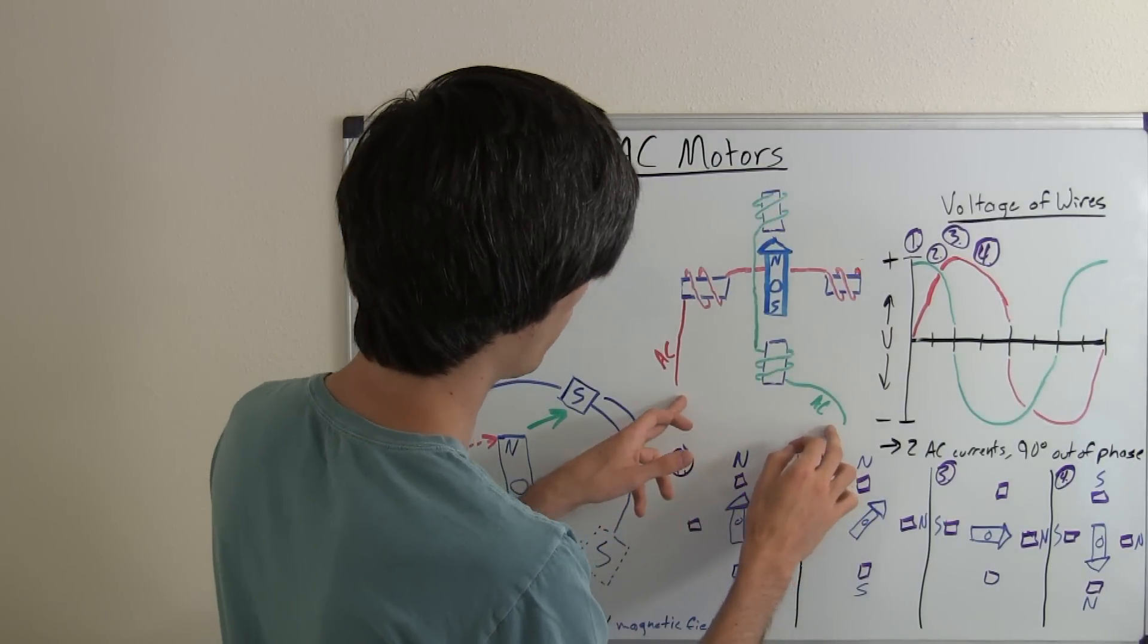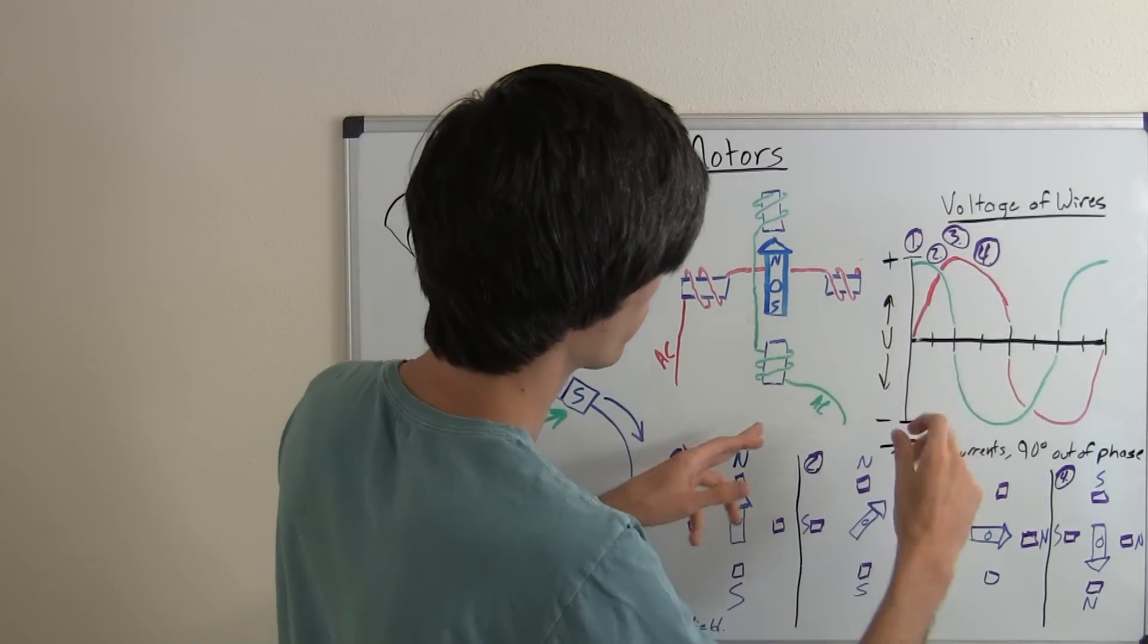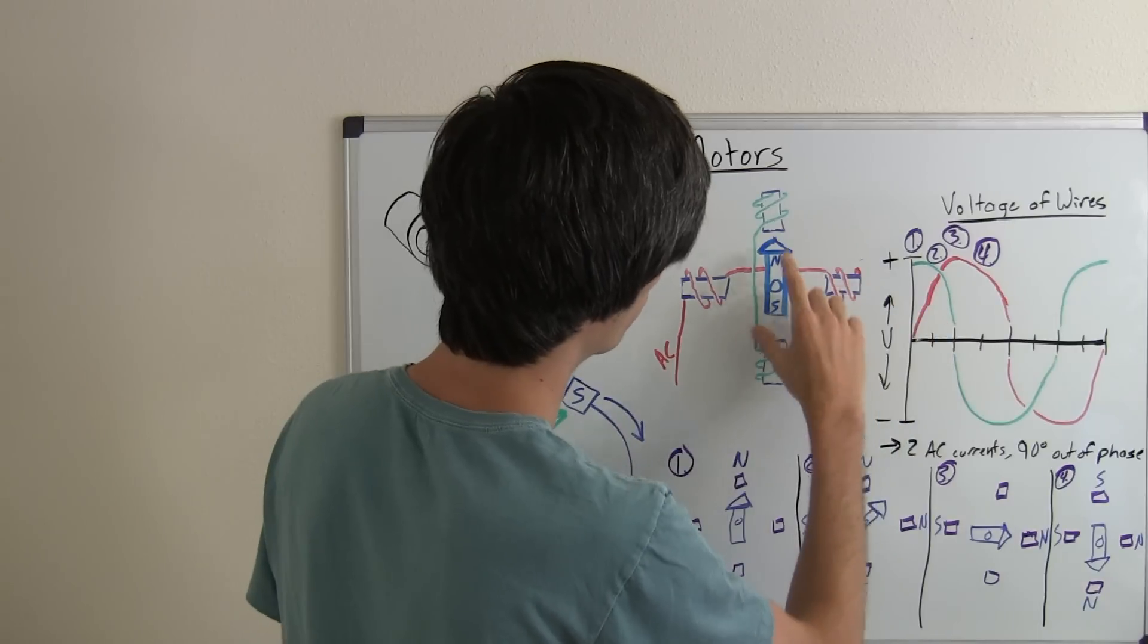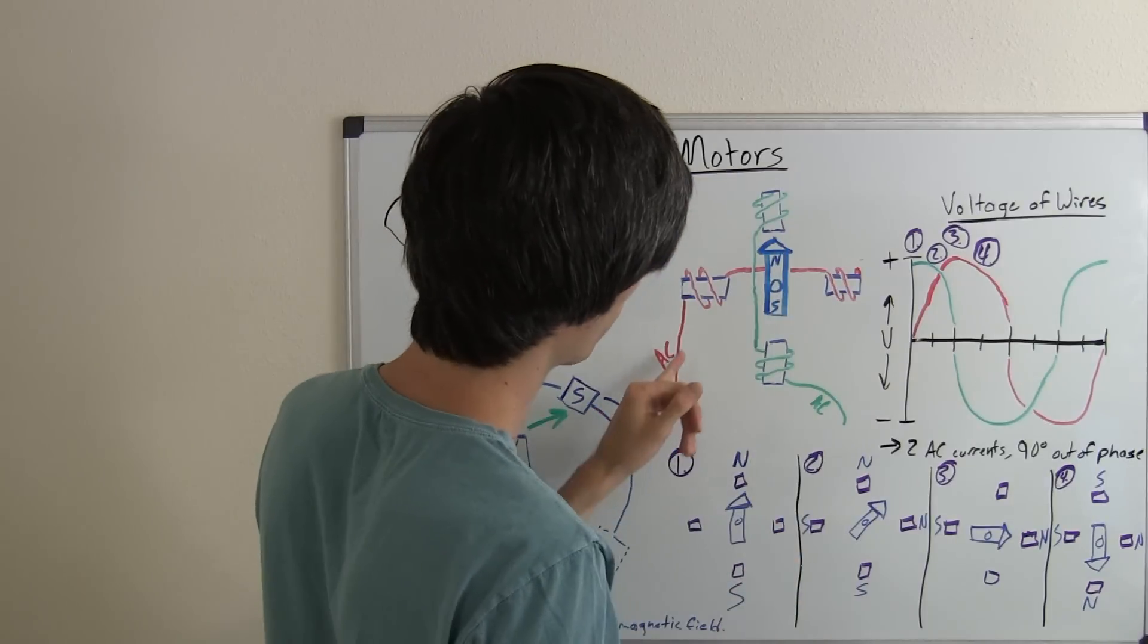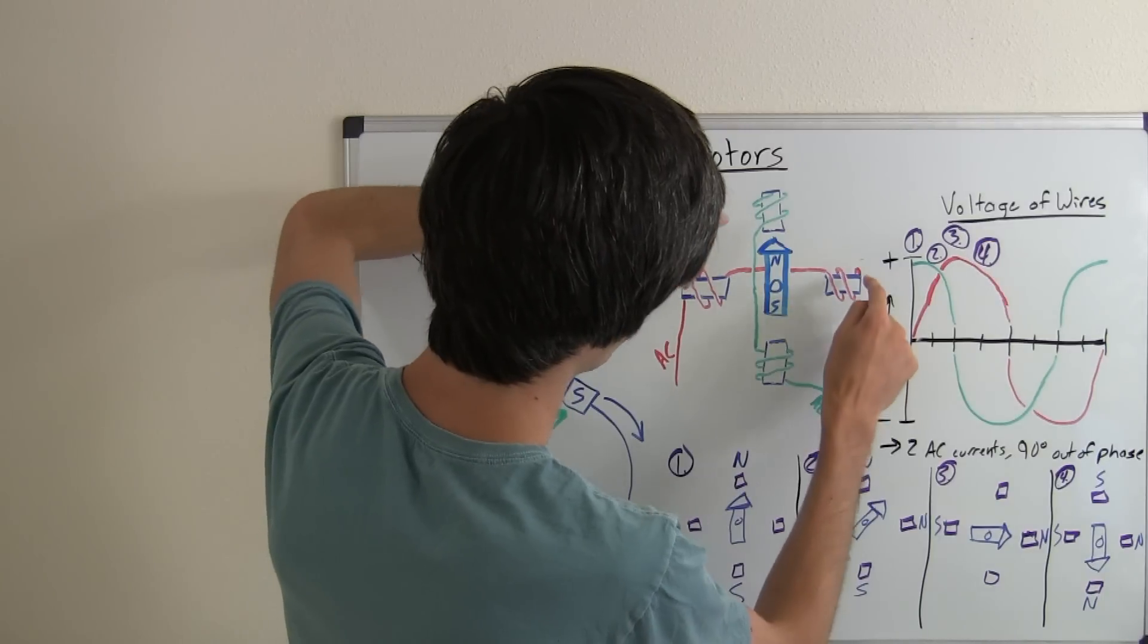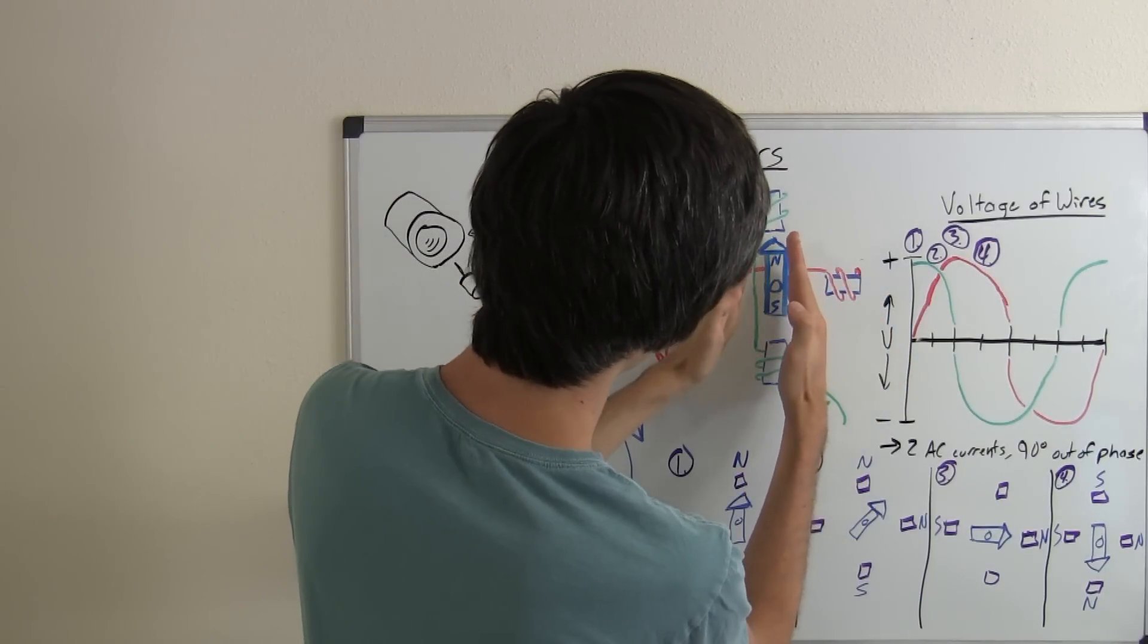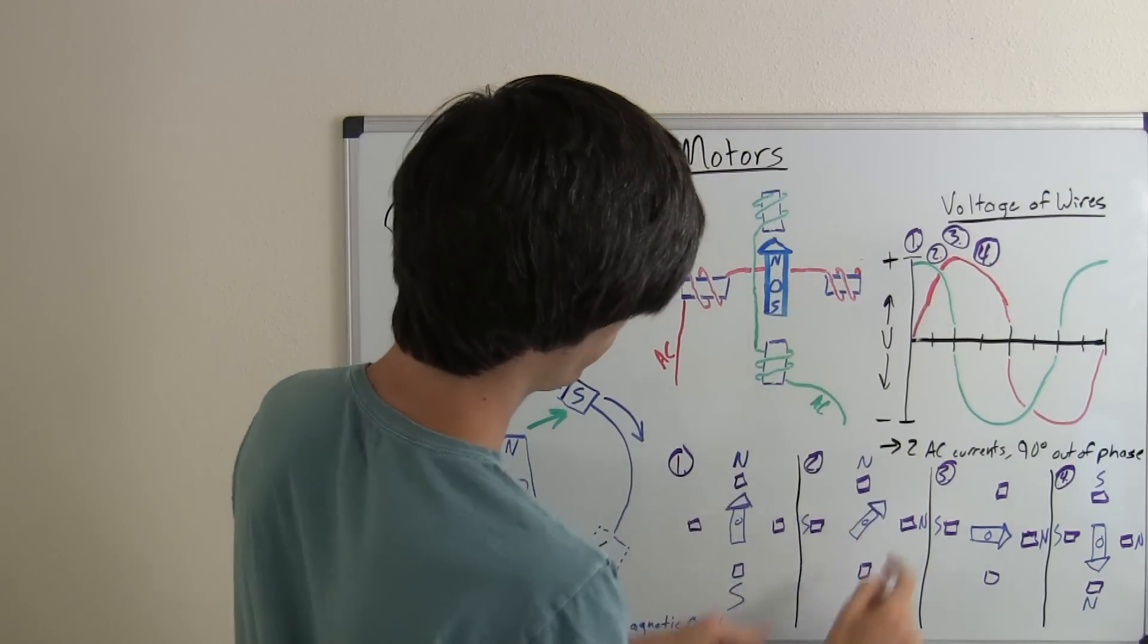Now, as you know, AC currents operate on a sinusoidal kind of loop here, so what happens at step two is you start to drop the current to this set of electromagnets and you start increasing the current to these coils. So that means you're going to be creating a north pole here and here, and a south here and here, and so this is going to want to move over to this direction. So that's our step two, as you can see there.